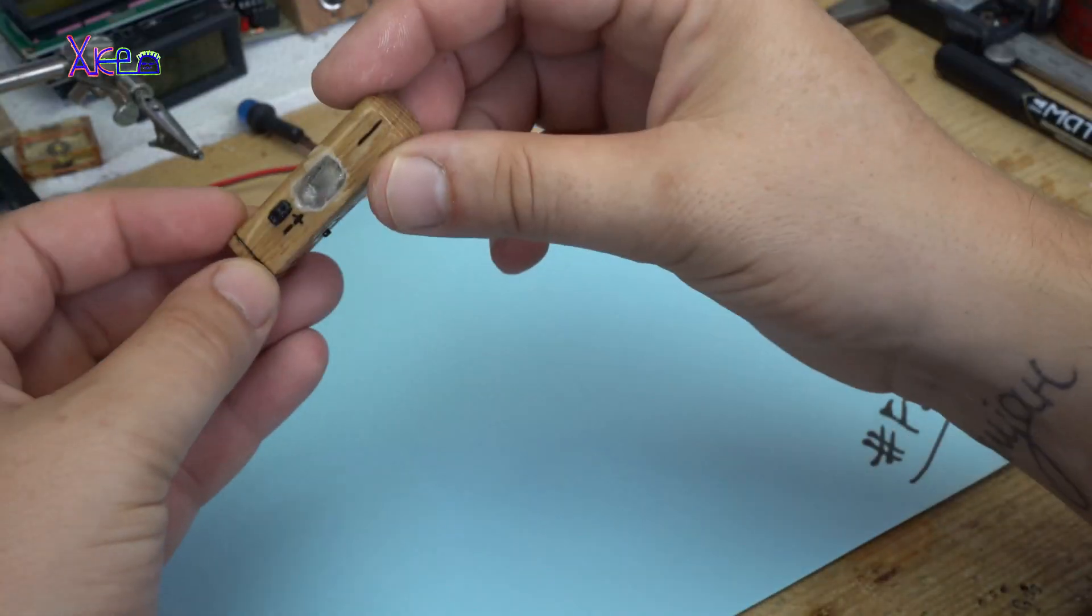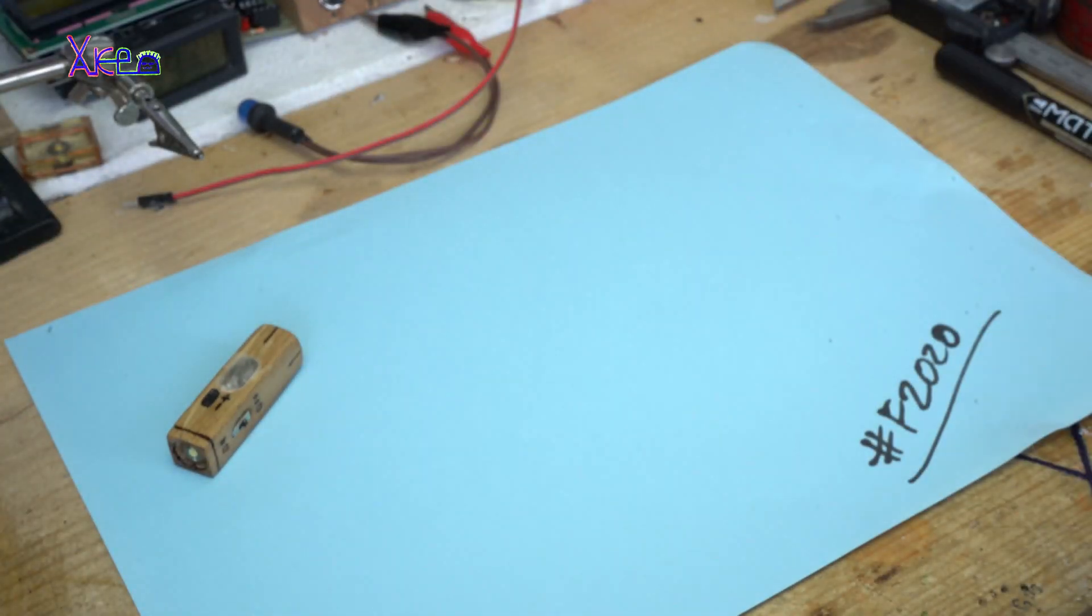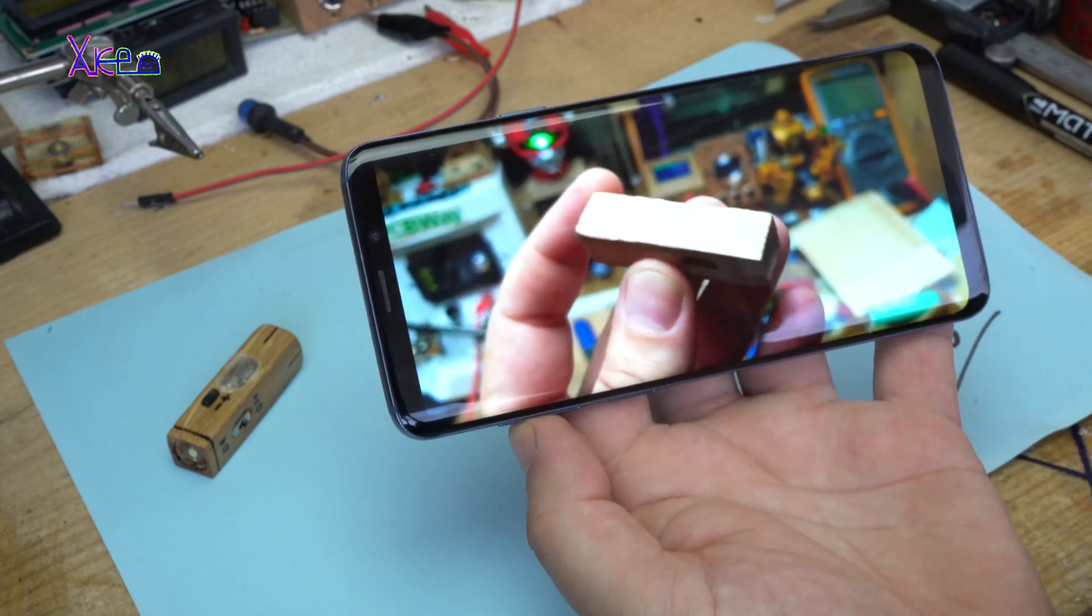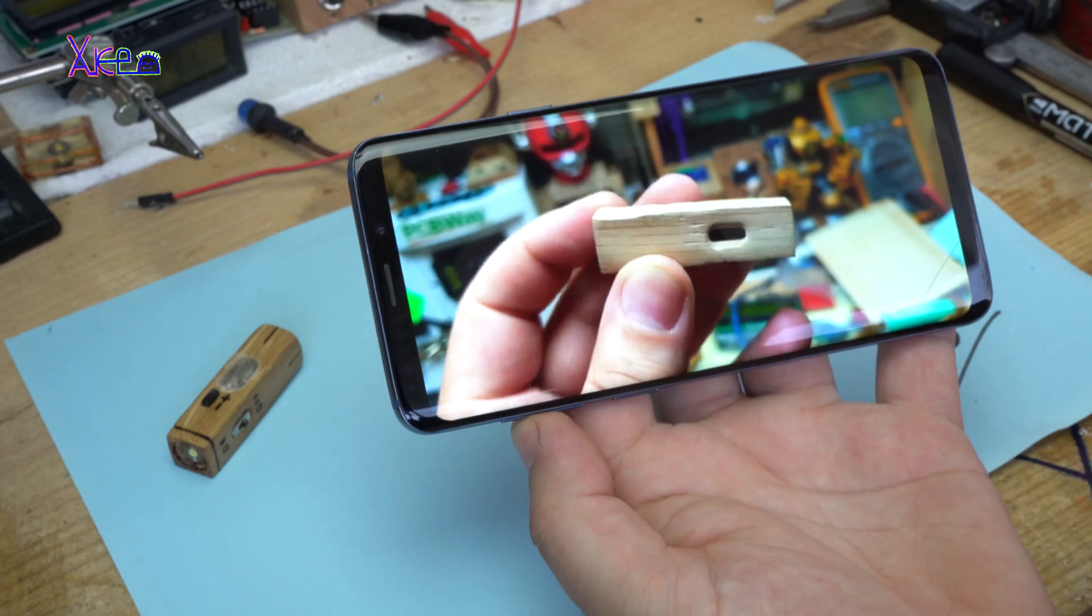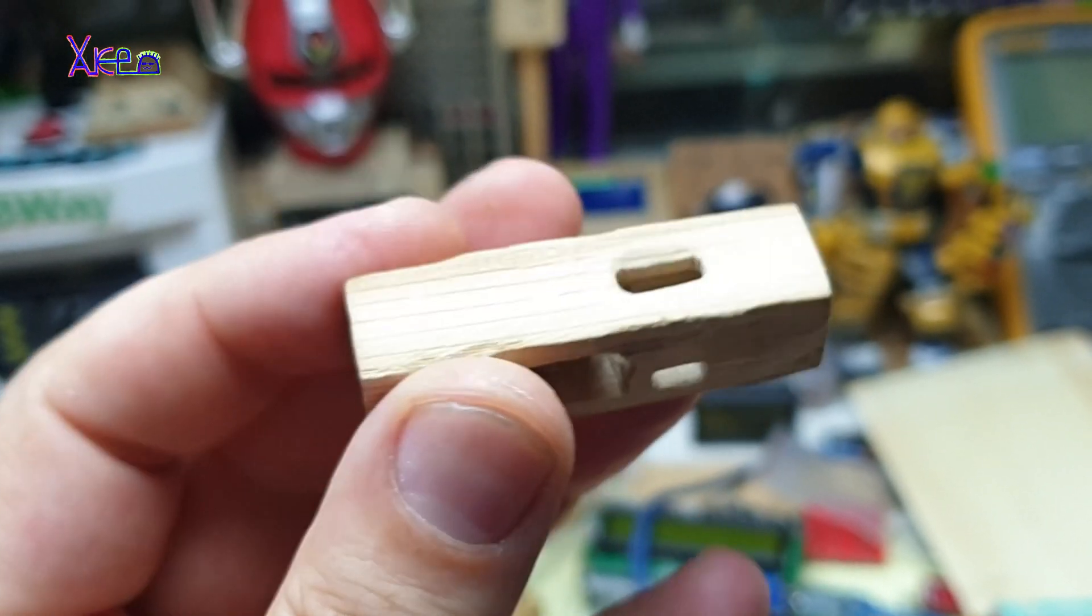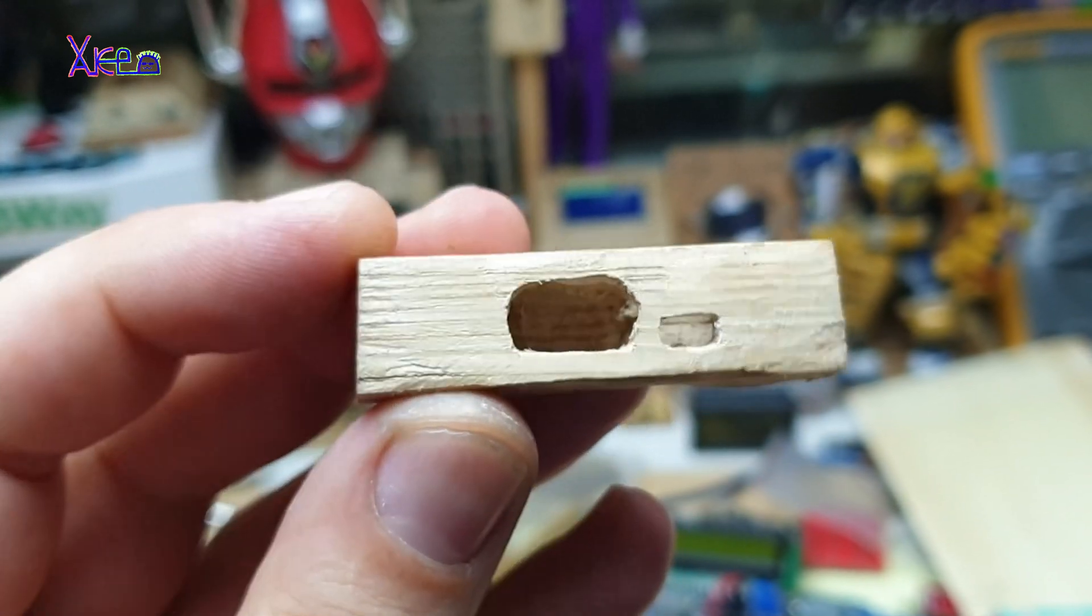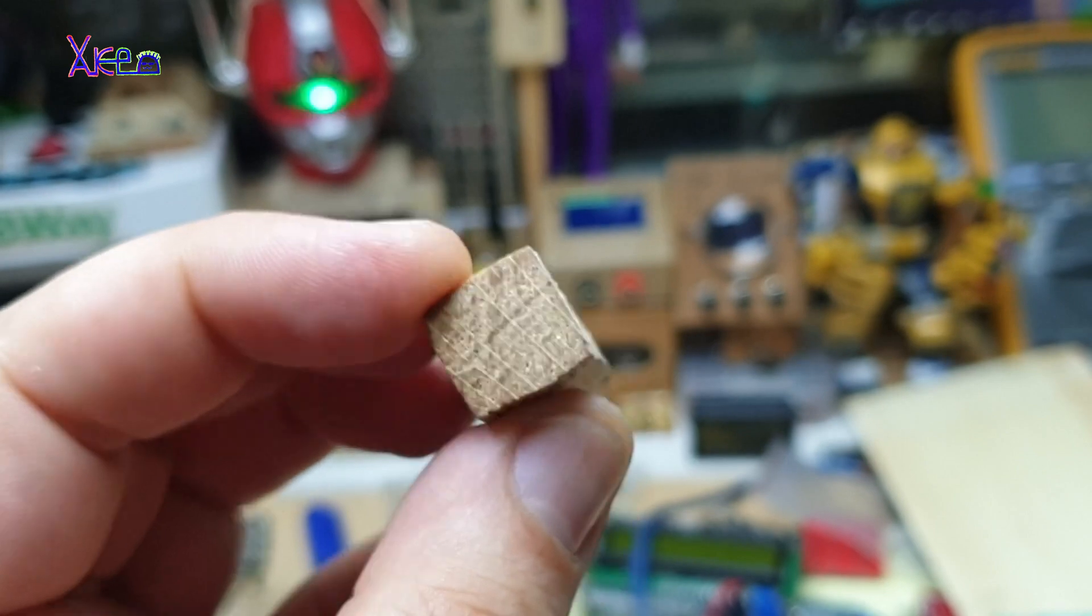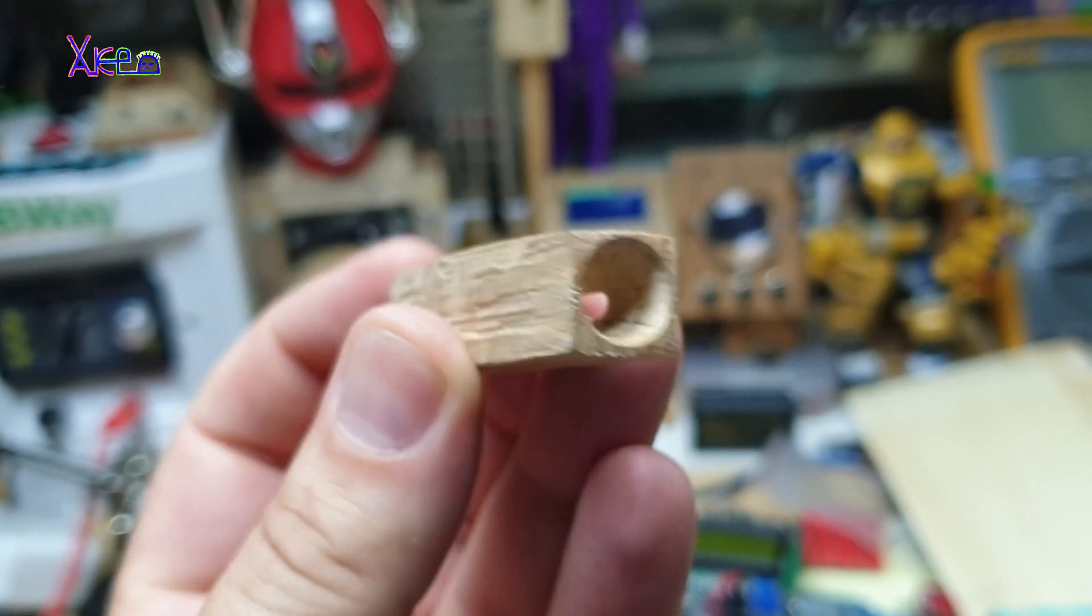How I made this gadget, we're gonna see in next couple of minutes. Starting now, I start with a small piece of wood and on that wood I have started to make some holes and openings for placing the micro switch, placing the two pin charging port.